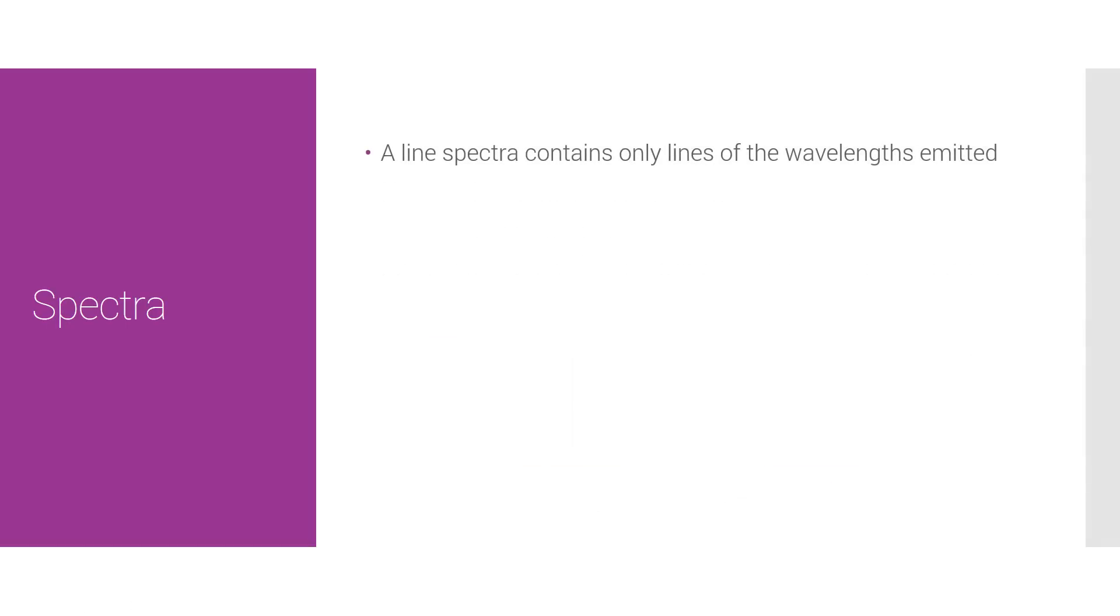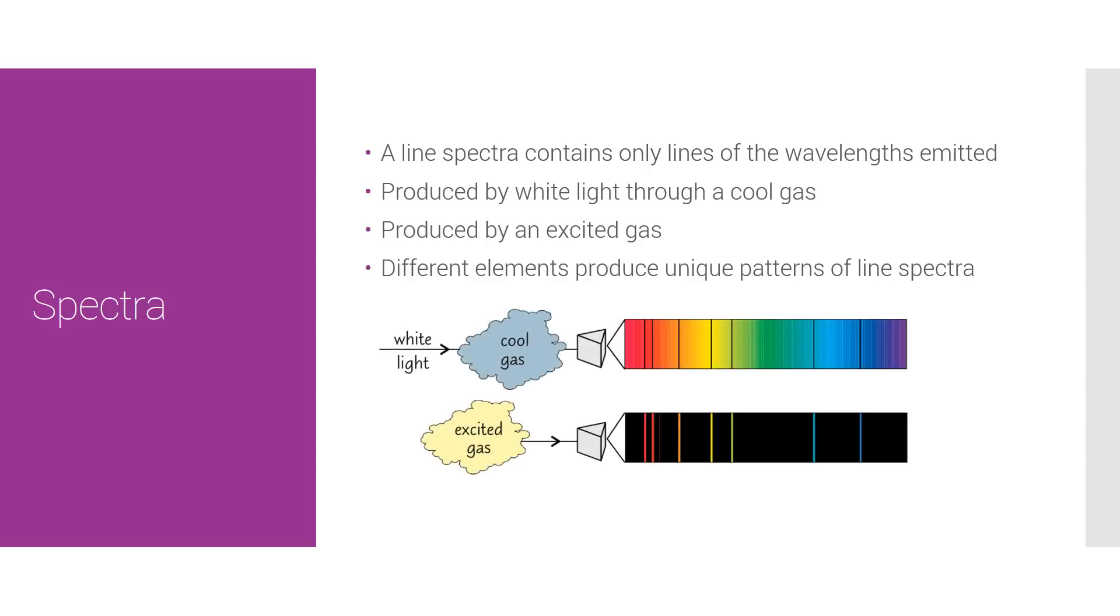A line spectra, on the other hand, only contains lines of the wavelengths that are emitted. It's produced by white light when you put it through cool gas, and it's also produced by an excited gas, and different elements actually produce unique patterns of line spectra. This is actually how we discovered helium from the sun. And this is an example of line spectra.